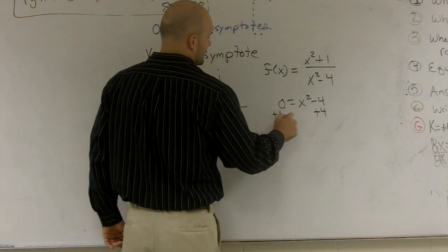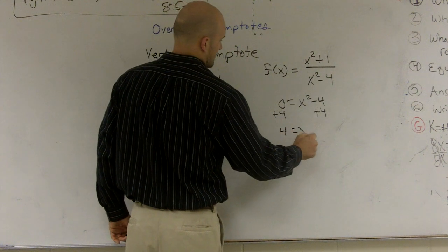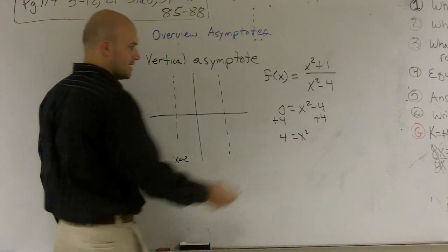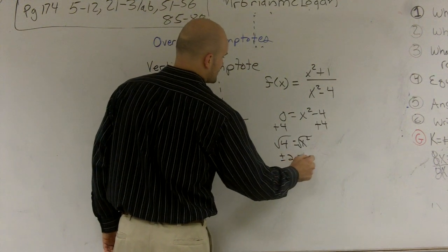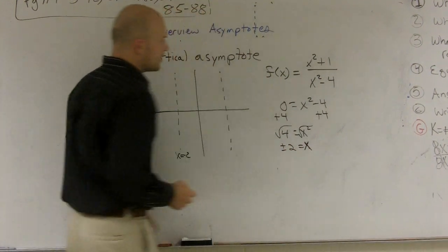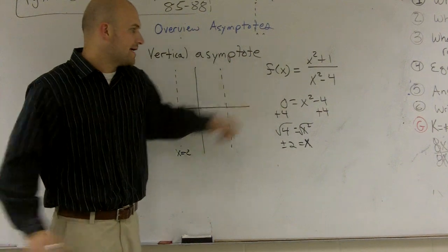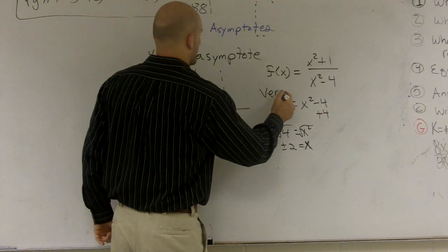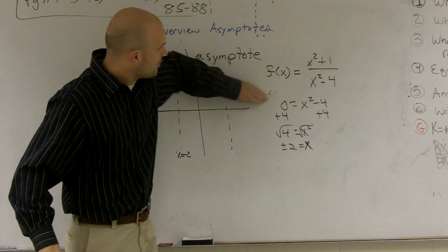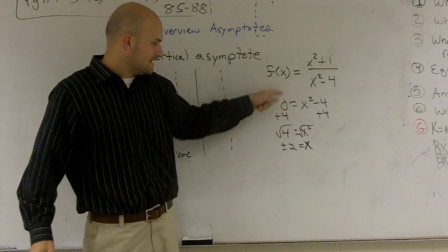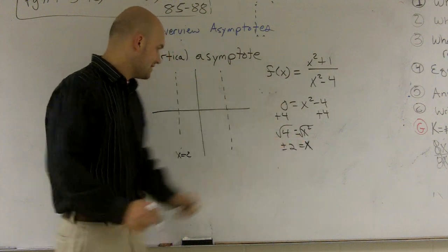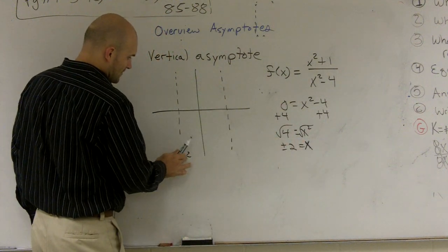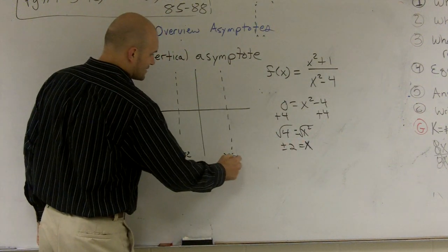And so when I add 4 over here, I get 4 equals x squared. I take the square root, and I get plus or minus 2 is equal to x. Therefore, when you're setting the bottom, which we call our vertical, so I already said vertical asymptotes are what you're going to set the bottom of your function equal to 0, and then you solve. And what those two values are, x equals negative 2 and x equals 2.